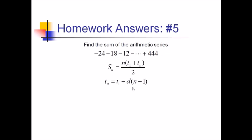I've got Tn equals T1 plus D times n minus 1. And this time around, I need to solve for n. Because I know Tn, I know T1. Common difference I can find pretty quickly. It's negative 18 minus negative 24, that would be 6. We're adding 6 each time. So plugging all that in, I've got 444 equals negative 24 plus 6 times n minus 1.